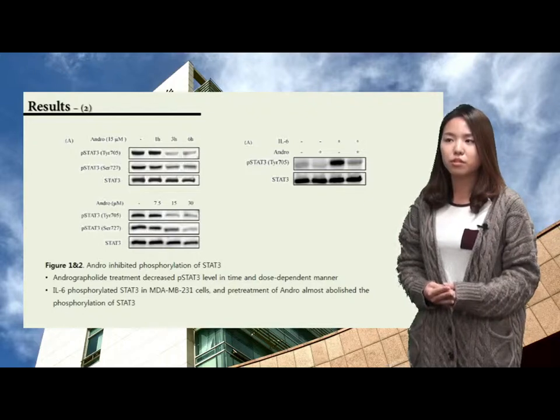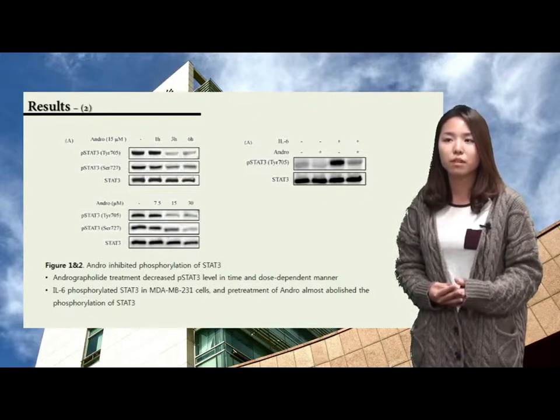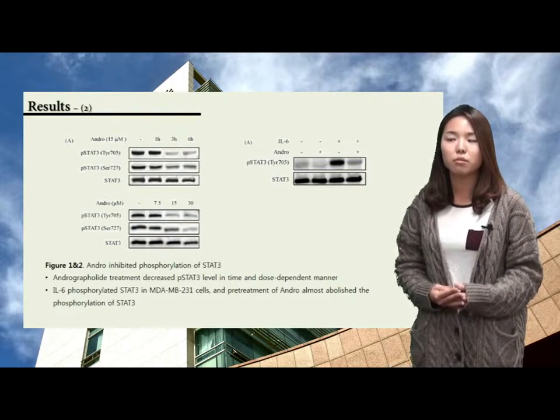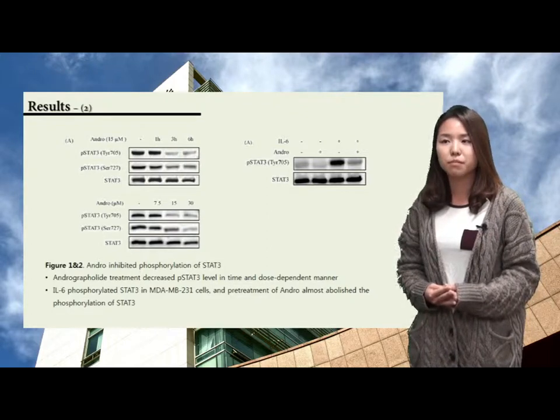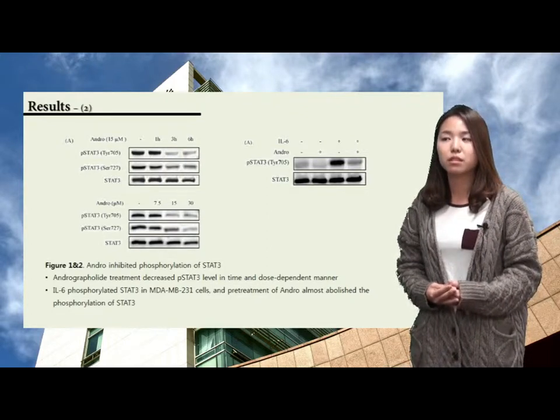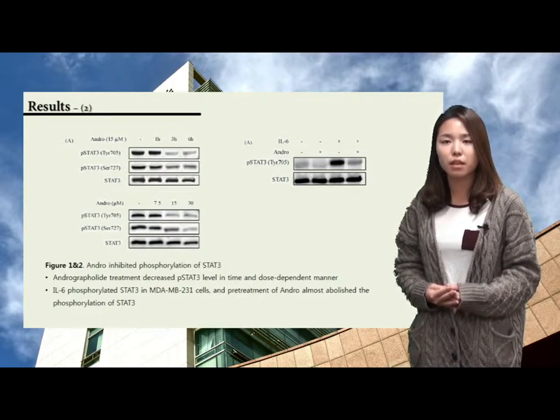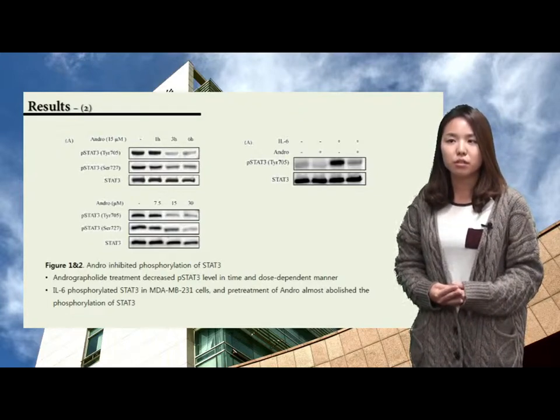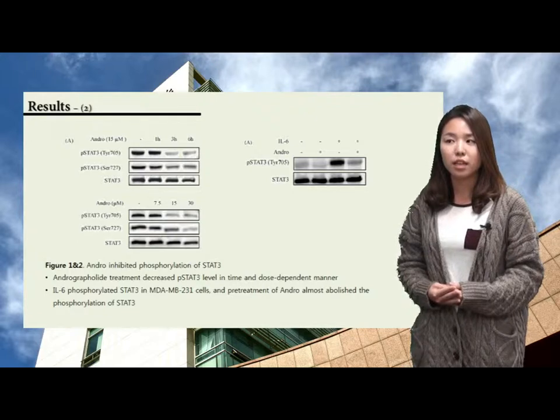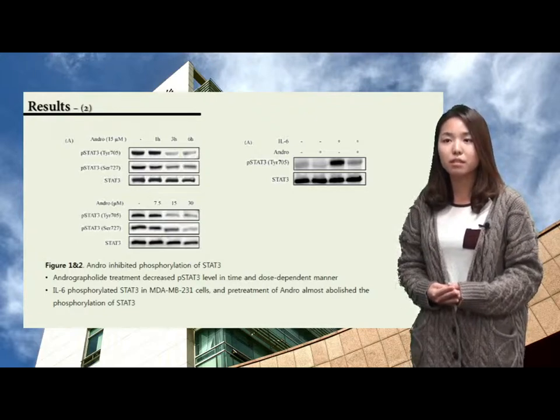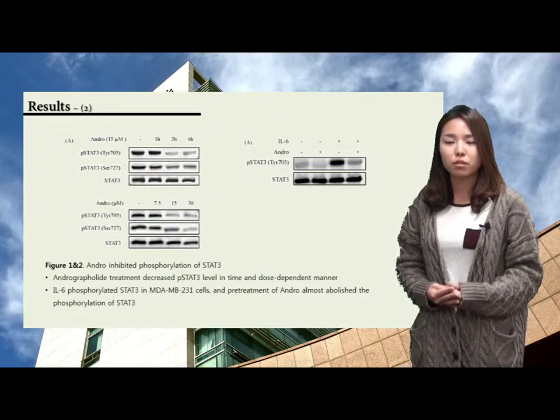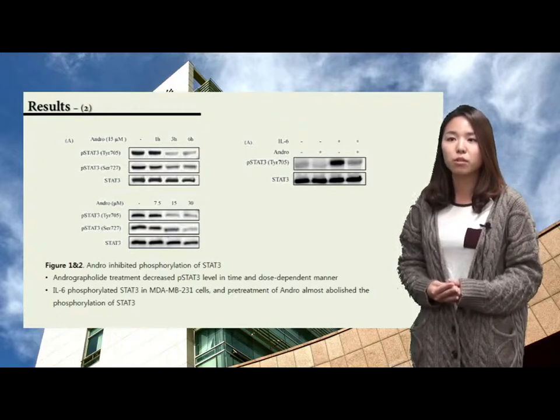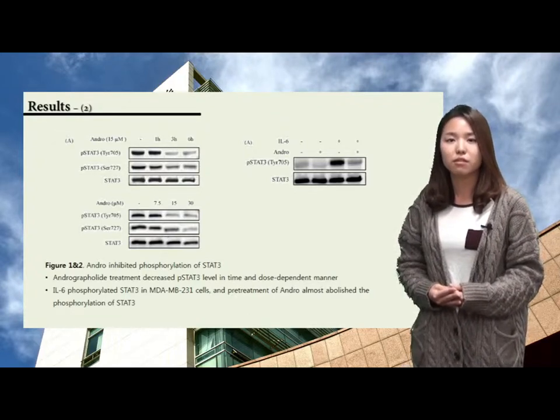The second paper used a drug named as andrographolide, which was isolated from a traditional herbal medicine. This andro treatment decreased phospho-STAT3 level in time and dose-dependent manner. IL-6 treatment phosphorylated STAT3 in MDA-MB-231 cells, but pre-treatment of andro for 4 hours almost abolished the phosphorylation of STAT3.